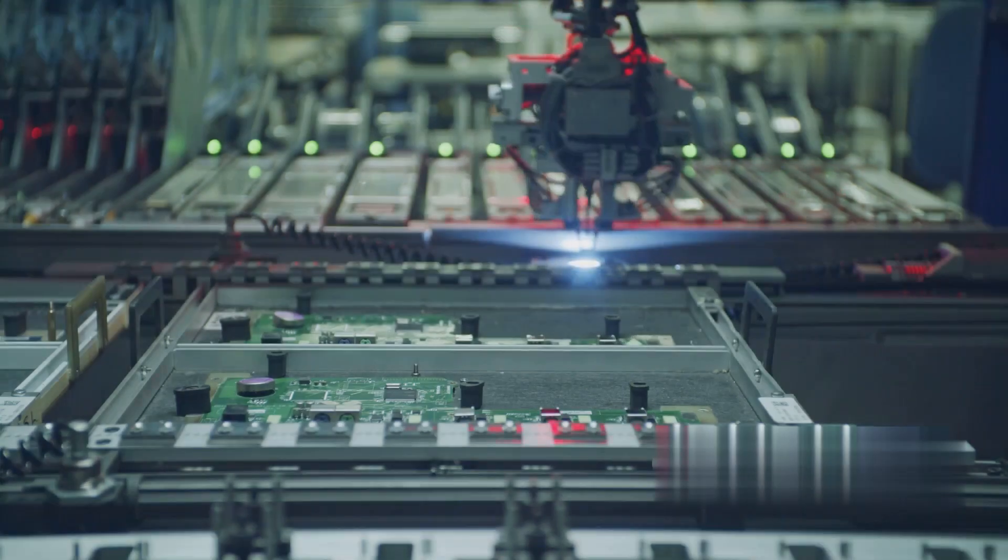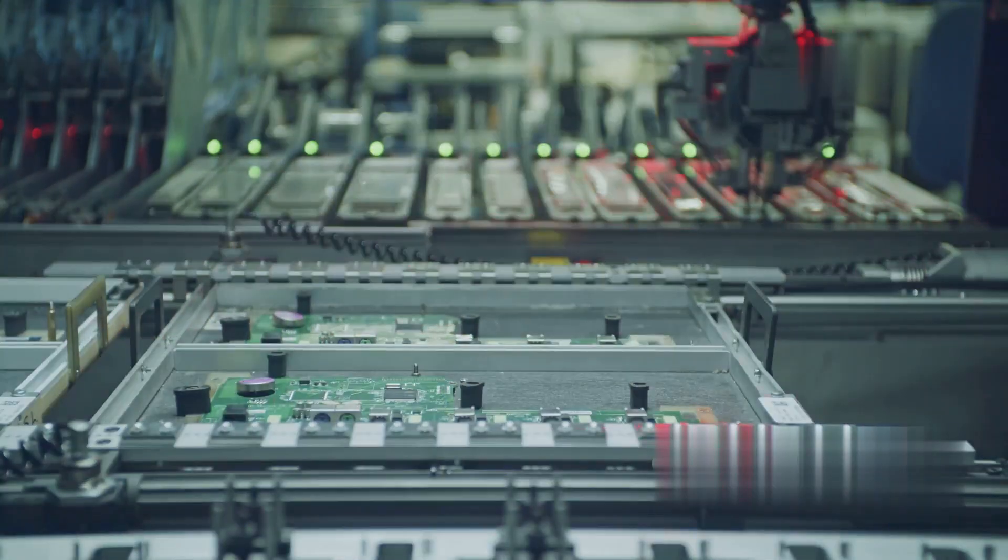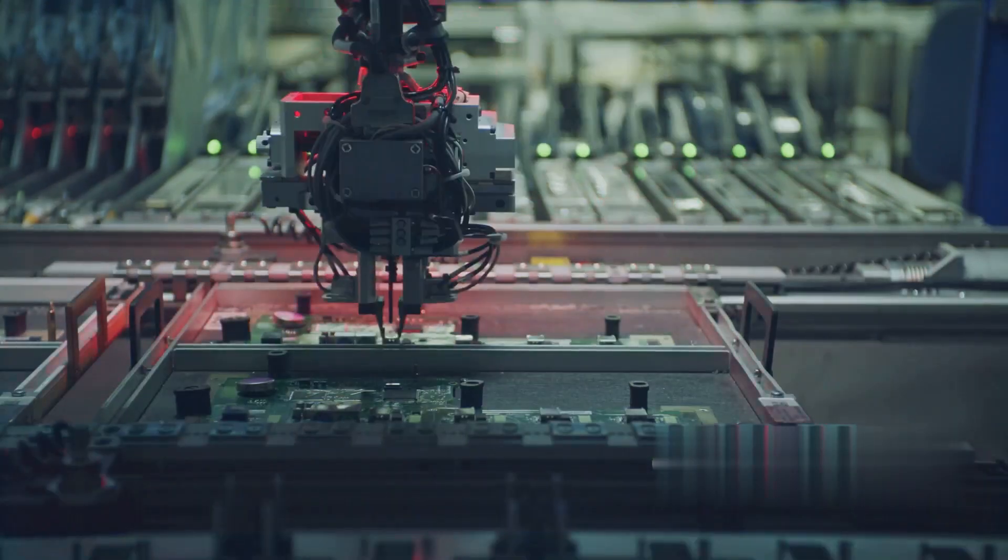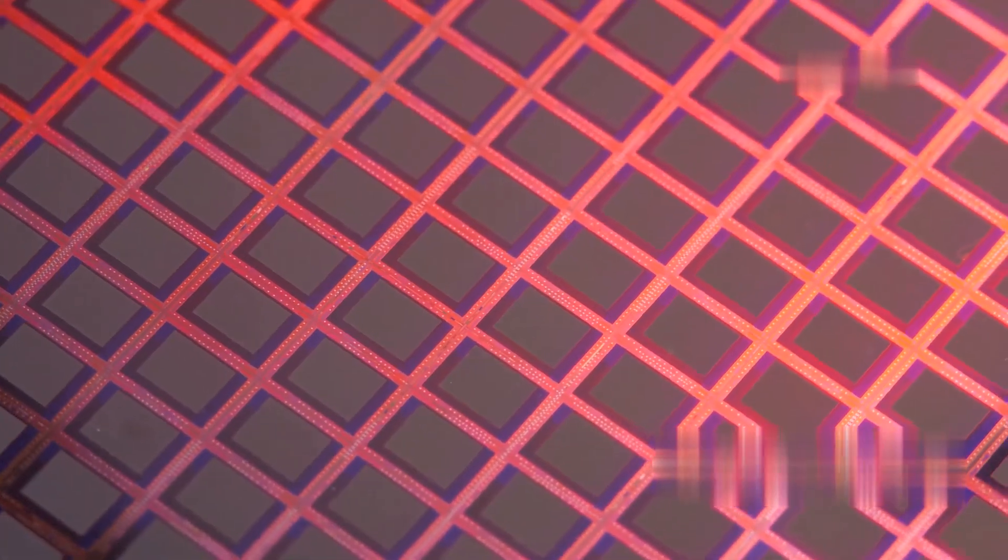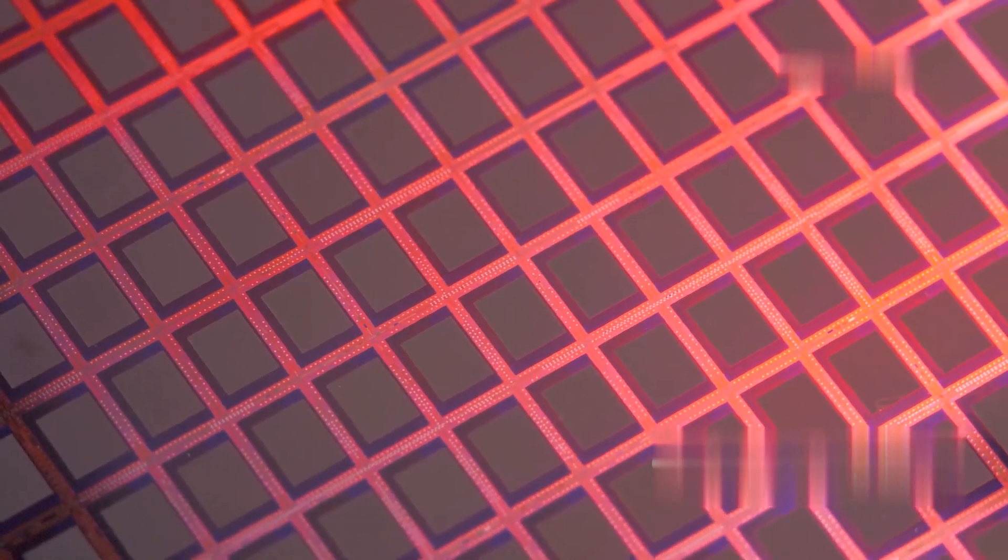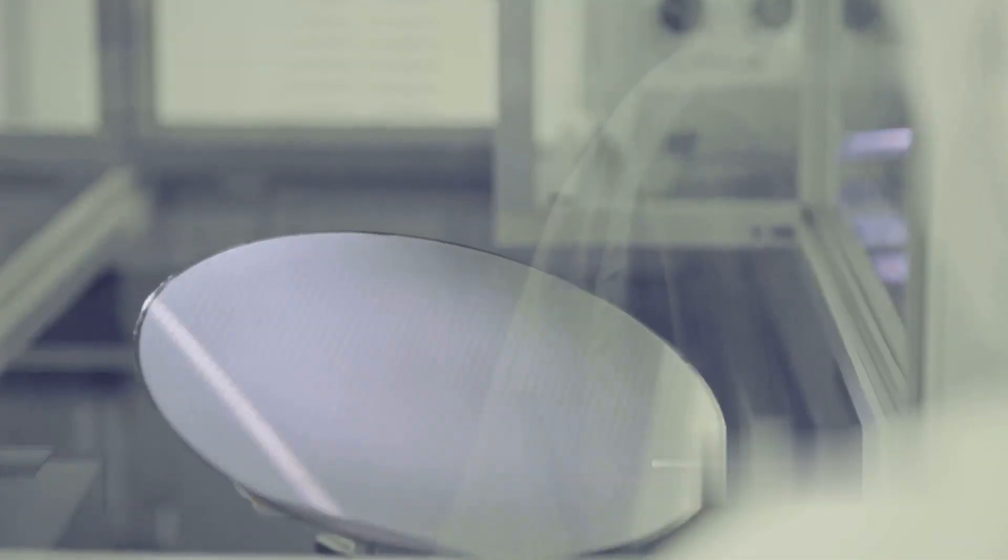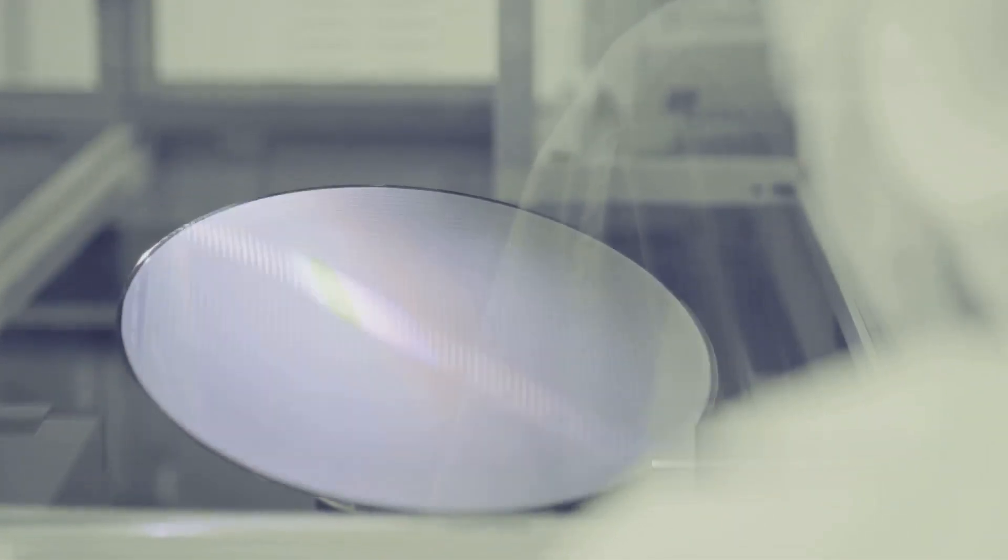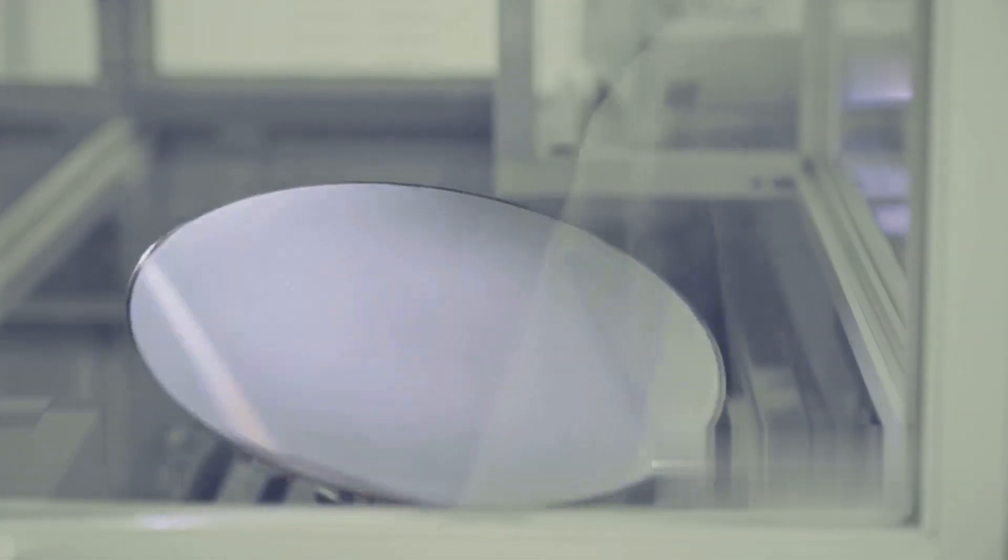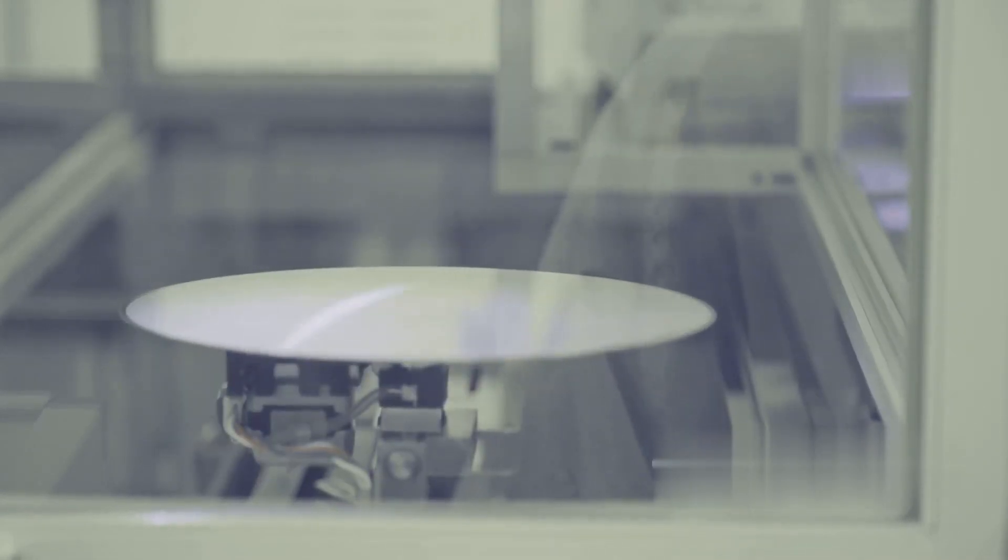The silicon ingots, shimmering with metallic purity, are sliced into thin, circular wafers. These wafers, typically just a few hundred micrometers thick, form the foundation for building integrated circuits. The wafers are meticulously polished to achieve a mirror-smooth surface essential for the precise fabrication processes that follow.